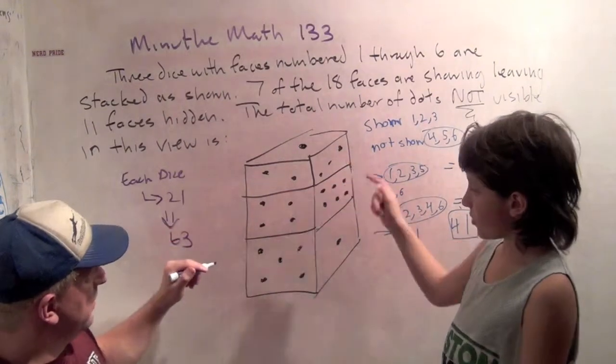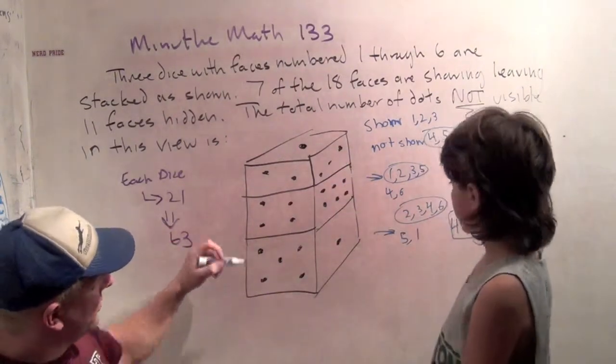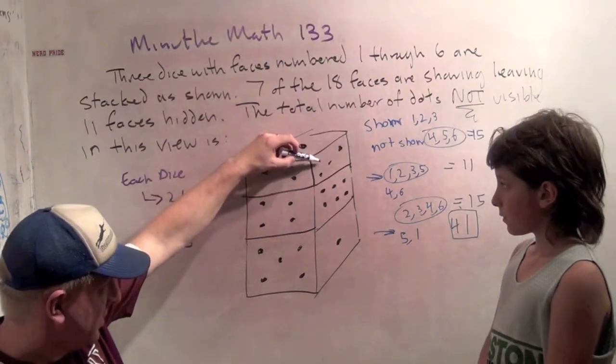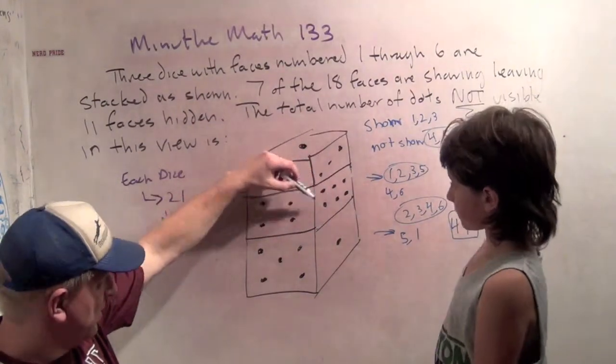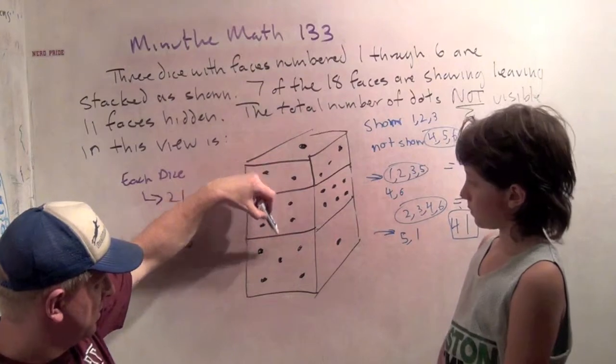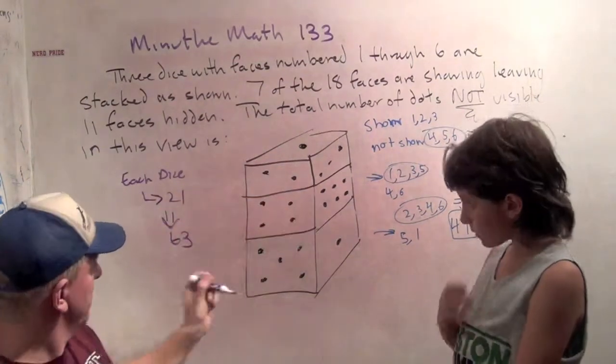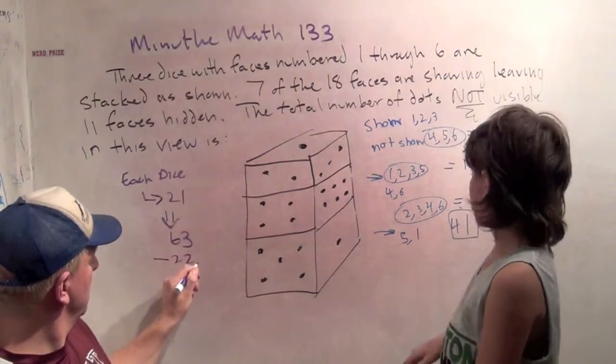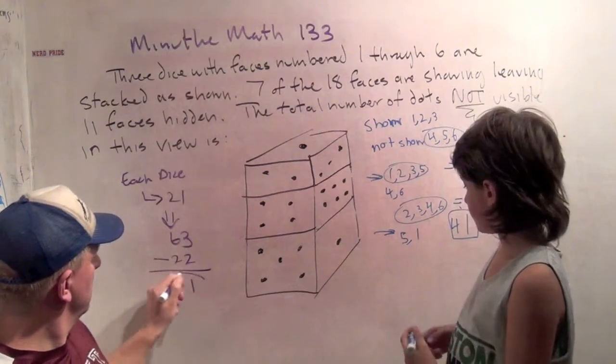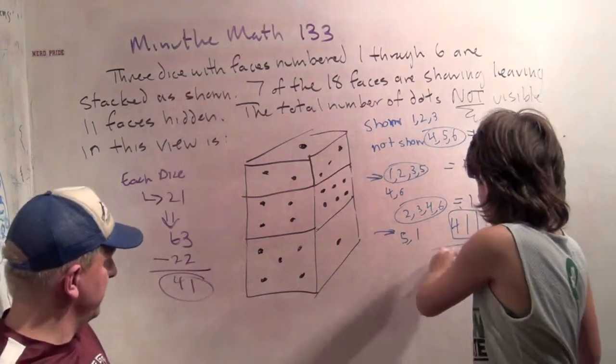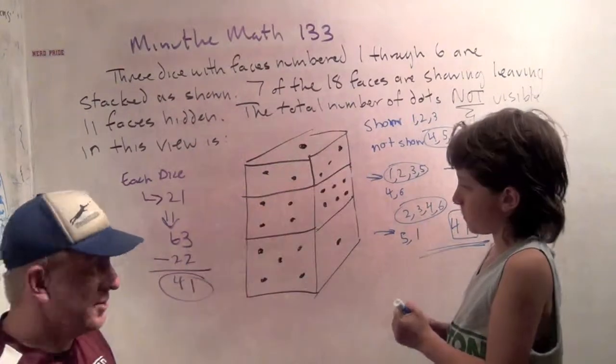And you can count the number of dots that are showing and subtract. So let's see, 1 plus 2 plus 3 is 6, plus 6 is 12, 16, 21, 22. Yeah, that is 41. 63 minus 22 is 41. You figured it out too.